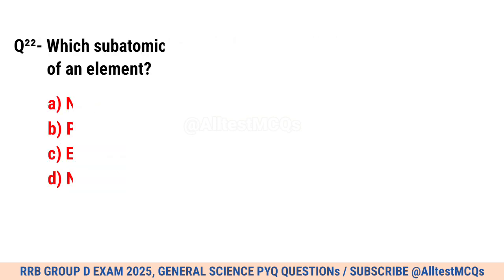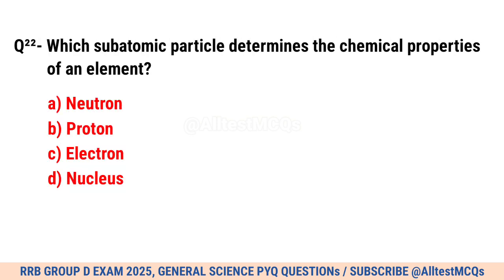Question No. 22. Which subatomic particle determines the chemical properties of an element? Correct option is C. Electron.